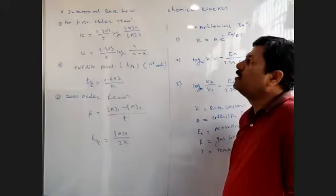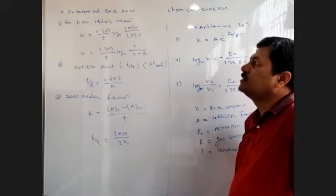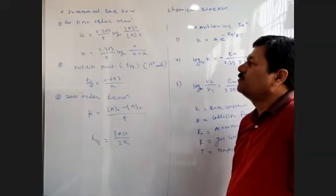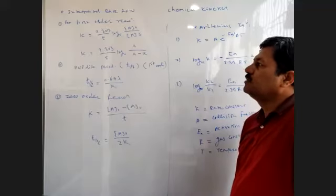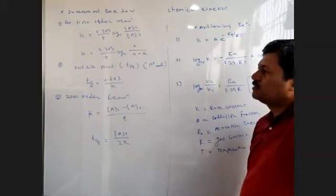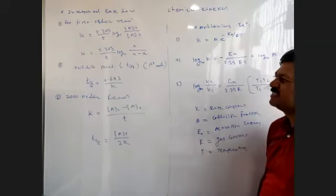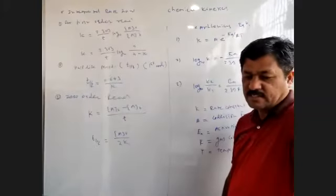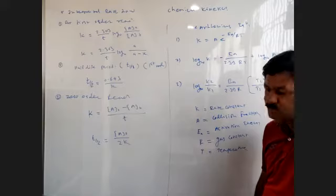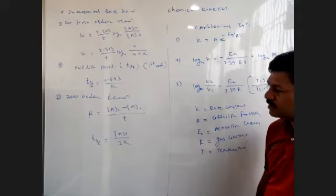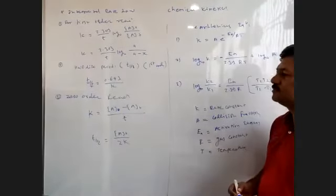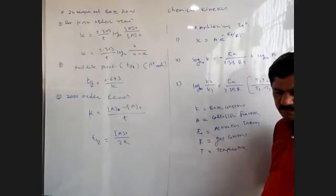Student recites: The integrated rate law for first order is k = 2.303/t × log(A₀/Aₜ). For half-life period, t½ = 0.693/k. For zero-order reaction, k = (A₀ − Aₜ)/t. Half-life for zero order is t½ = A₀/(2k).